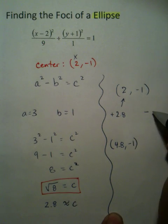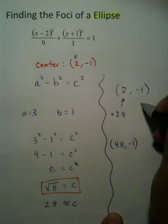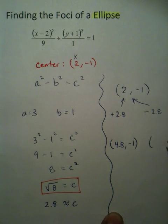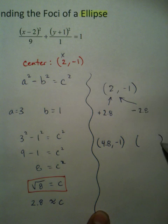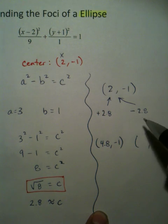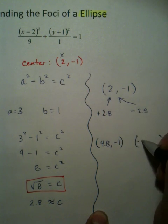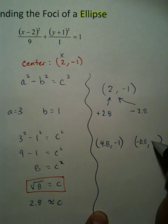I need to add 2.8 here, which is going to give me the values 4.8, negative 1, and then I'm going to subtract 2.8 to get another coordinate, so I'm going to move this over a little more, to get another coordinate, and that coordinate is going to be negative 0.8, comma 1.